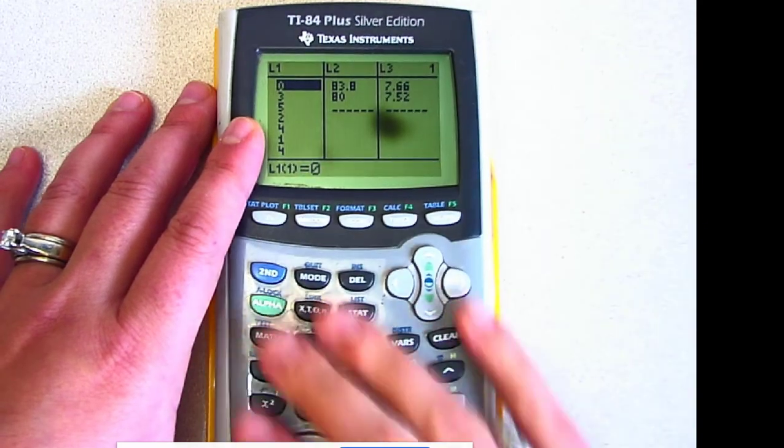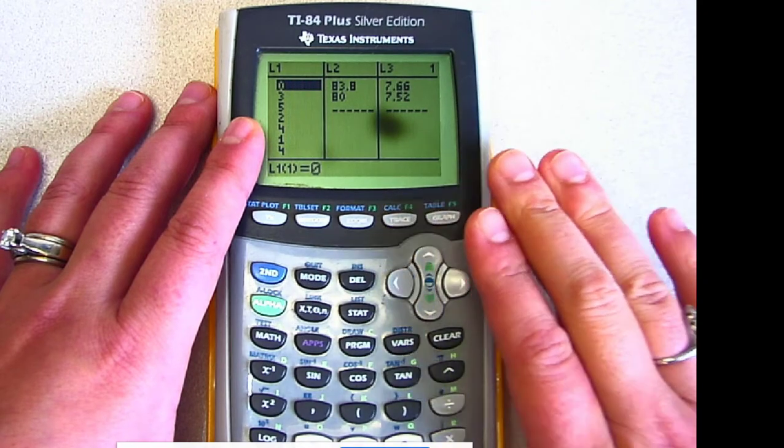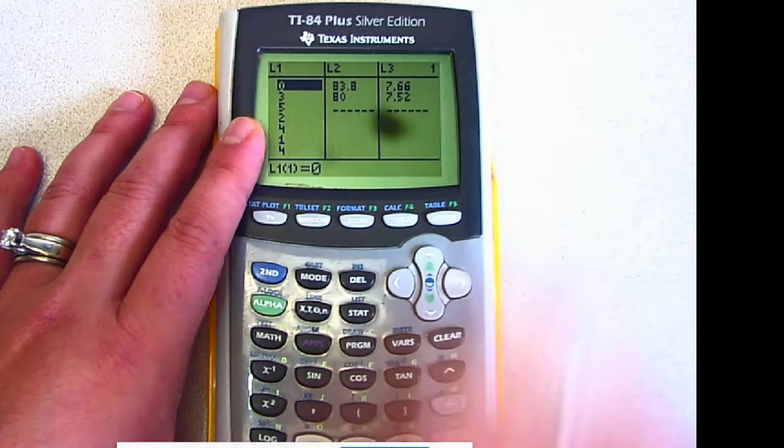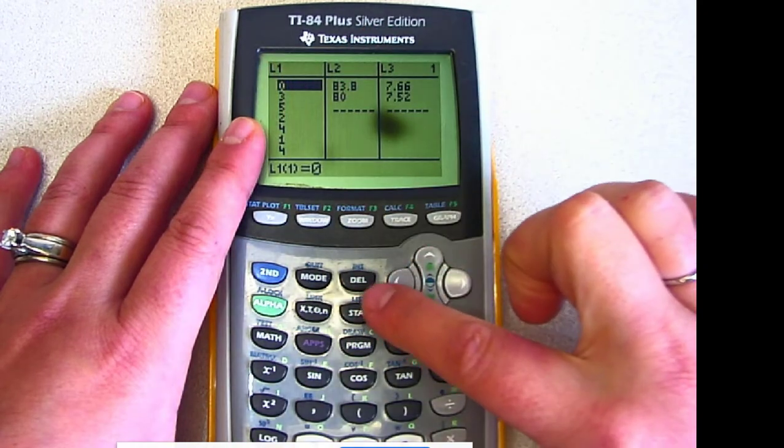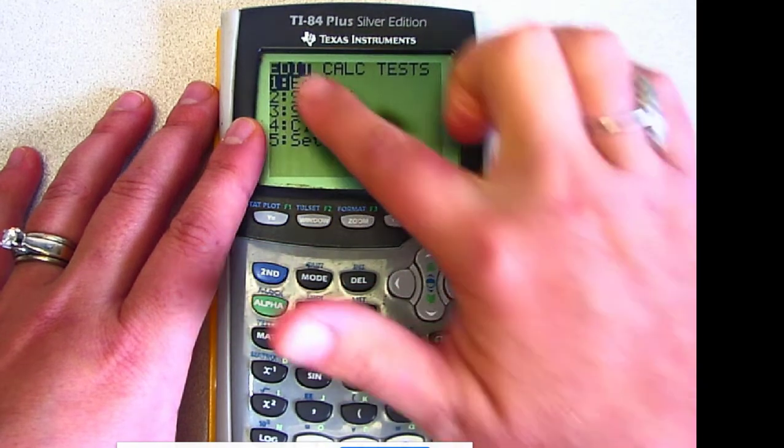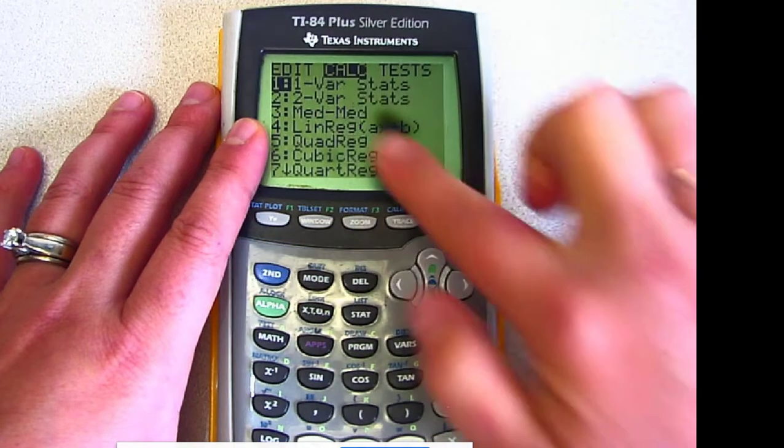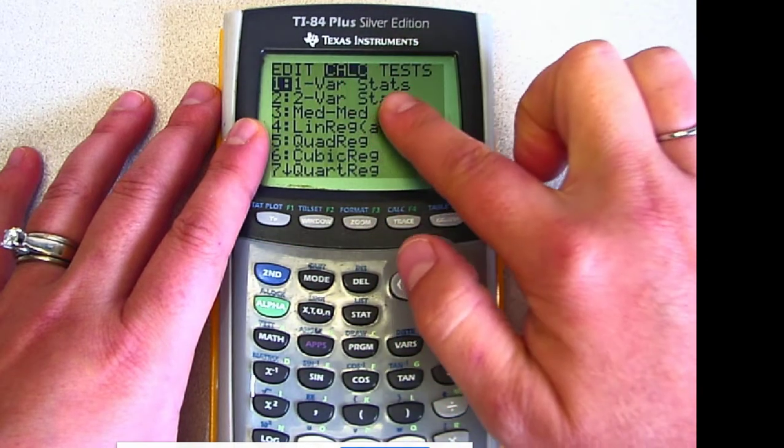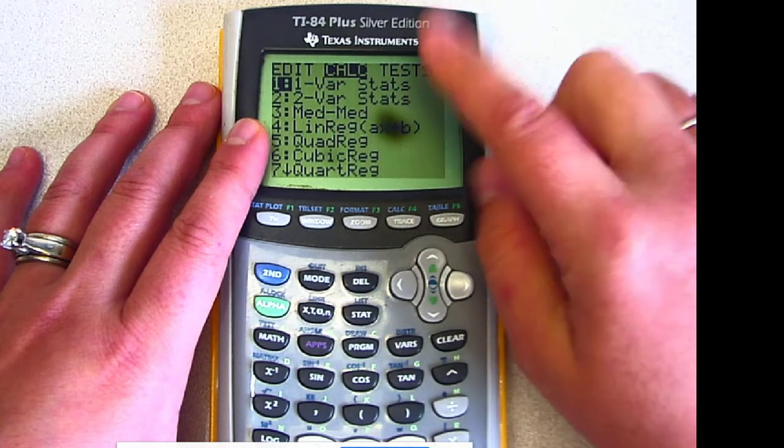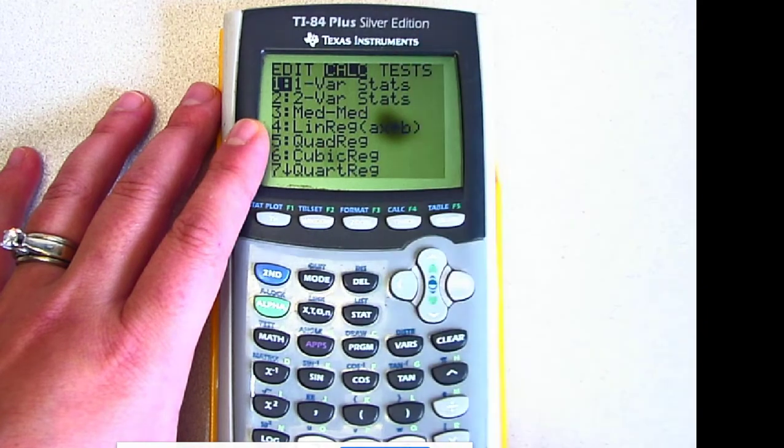Now I can actually analyze this data. Go to STAT, and this time because I want to do calculations, I'm moving into the Calc option. Remember, these notes only had one variable, so we want number 1, which is One Variable Stats.